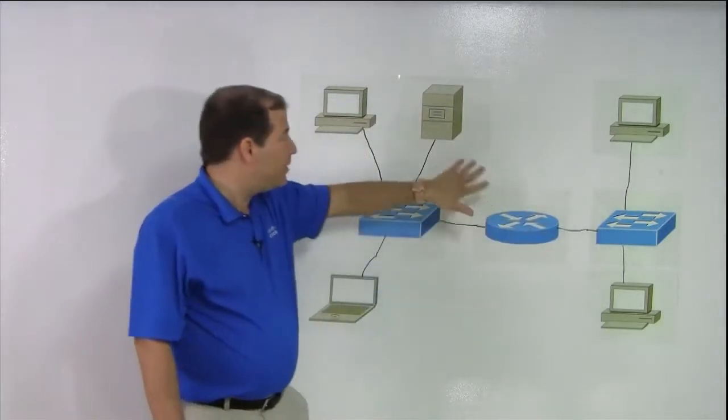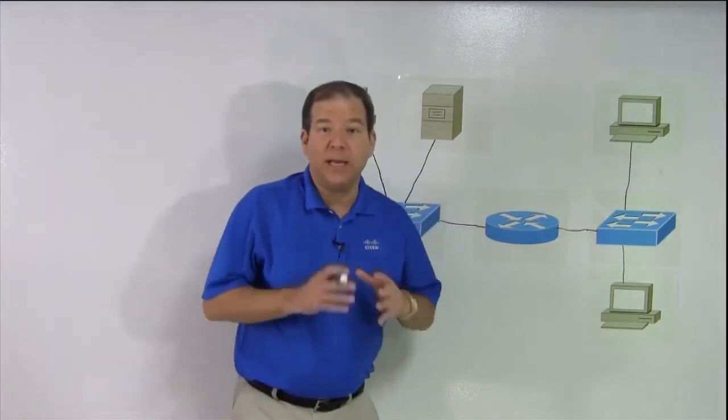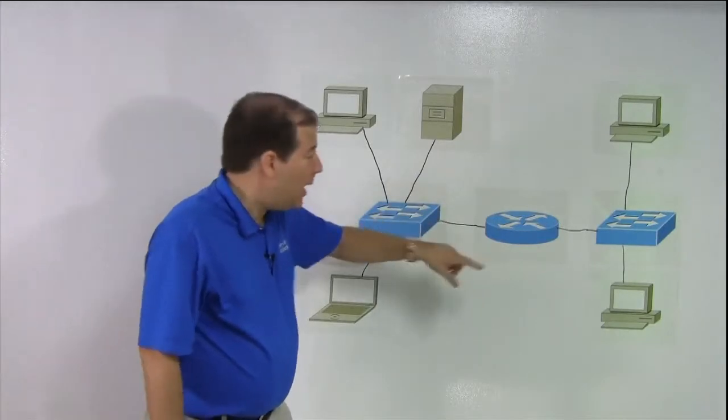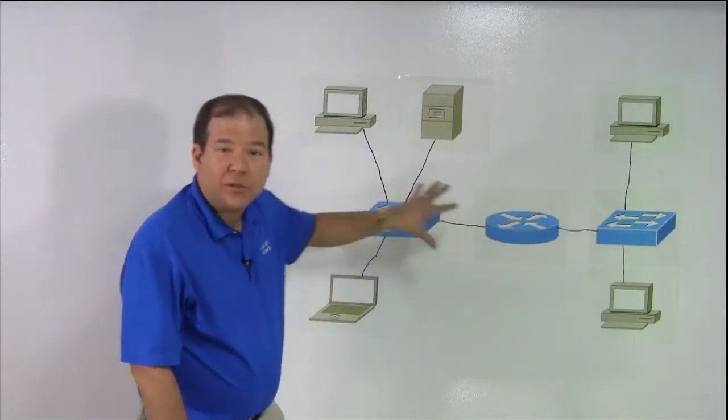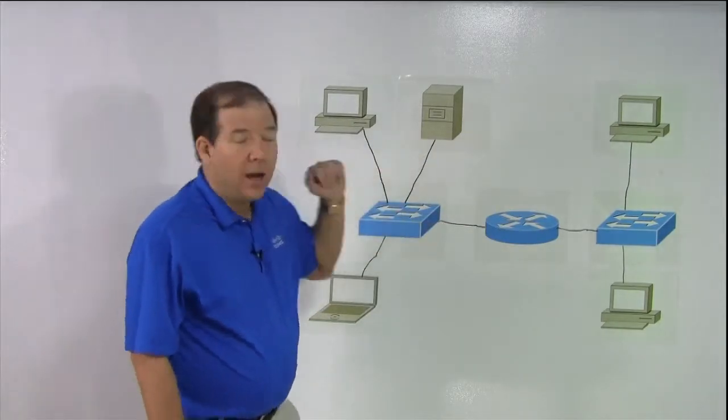If traffic does need to go from, let's say, this client to the file server, no problem. The router is going to see that this client wants to get to an address that's on this network. And that's what the router does. It routes traffic from, in this case, this client, through the switch up to the server.